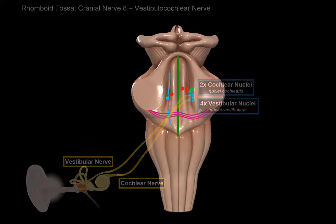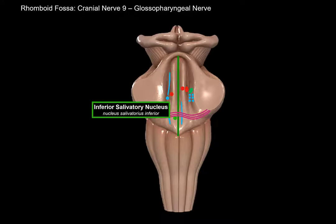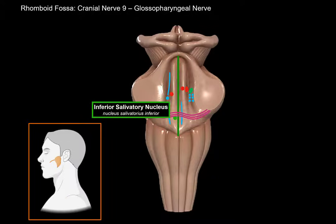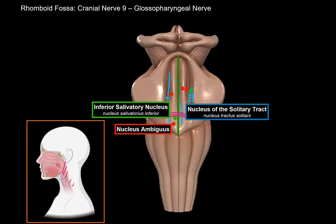Next is the 9th cranial nerve, the glossopharyngeal nerve. This nerve contains motor, sensory, and parasympathetic fibers. The parasympathetic fibers come from the inferior salivatory nucleus, innervating salivary glands like the parotid gland. The motor fibers come from the nucleus ambiguus, innervating muscles of the pharynx and the soft palate. The sensory fibers synapse with the nucleus of the solitary tract, containing sensory information about taste from the posterior third of the tongue.